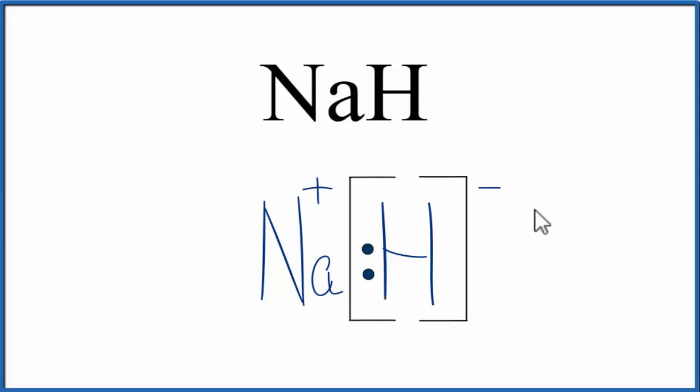Also note that this is what we call a formula unit. NaH exists as a group of formula units all together in a repeating pattern called a crystal. But this is helpful for us to understand how the valence electrons are transferred from the sodium to the hydrogen.